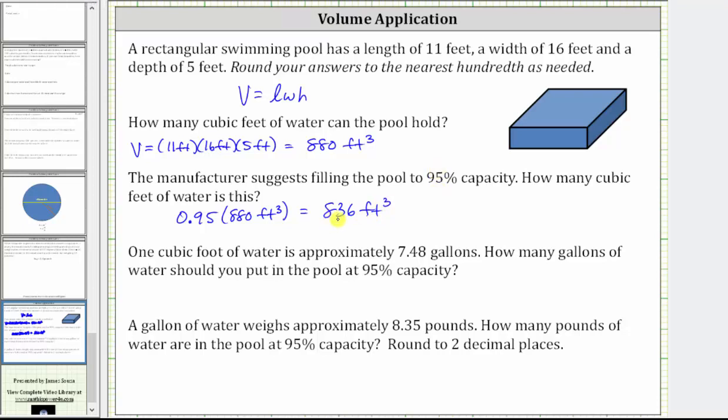So let's begin with 836 cubic feet as a fraction with the denominator of one. Now multiply by a unit fraction using the conversion, one cubic foot is approximately 7.48 gallons. For the unit fraction, because we have cubic feet in the numerator here, we need to have cubic feet in the denominator of the unit fraction, so that the units of cubic feet will simplify out, leaving us with gallons.